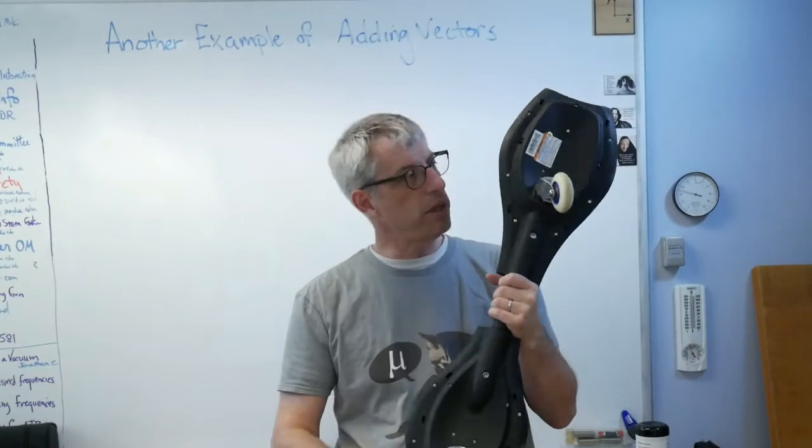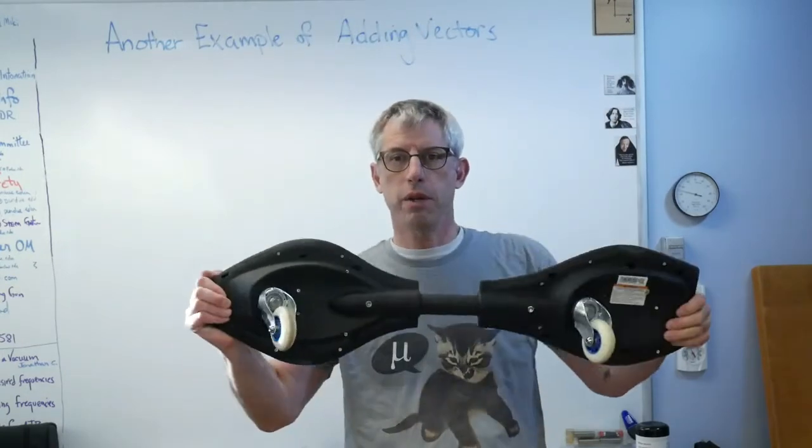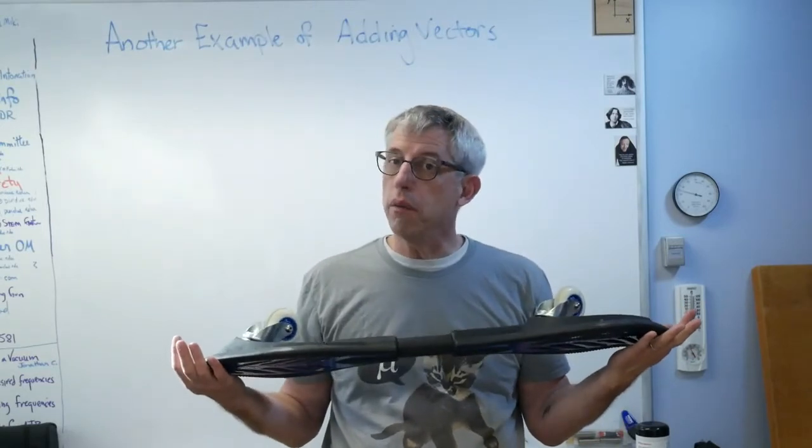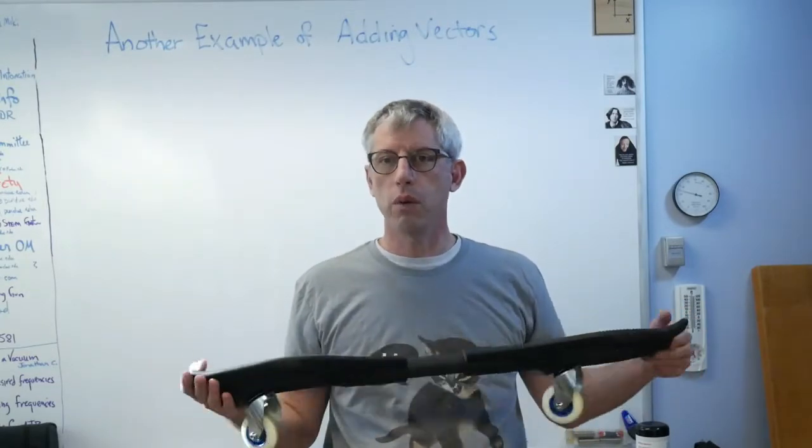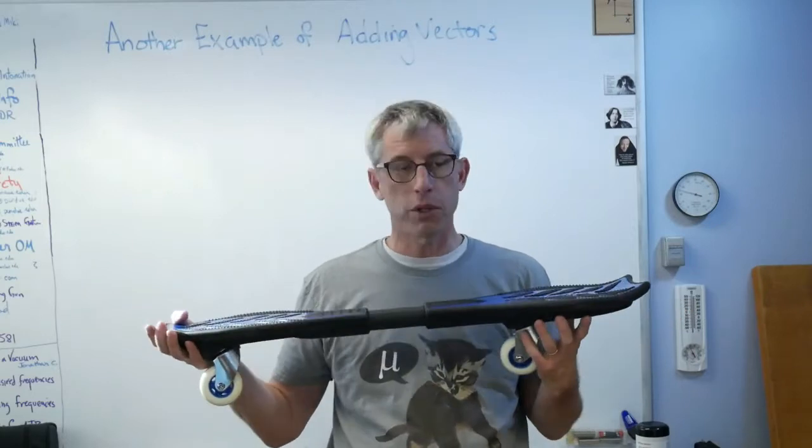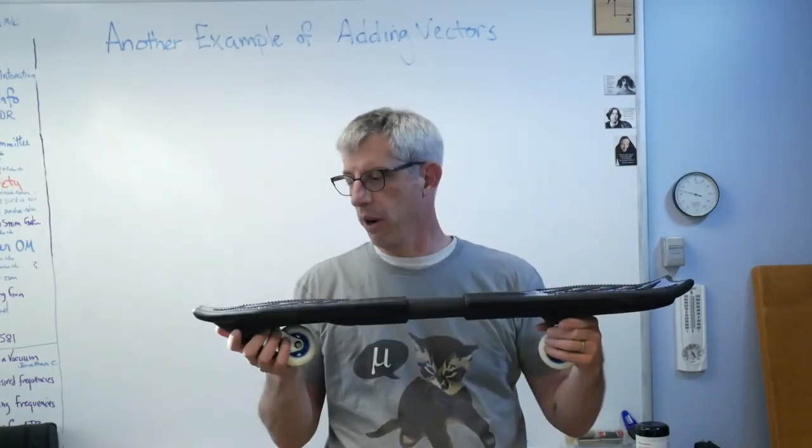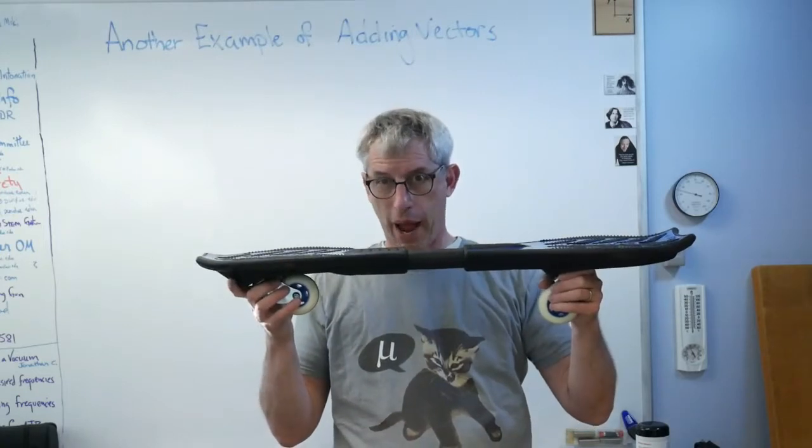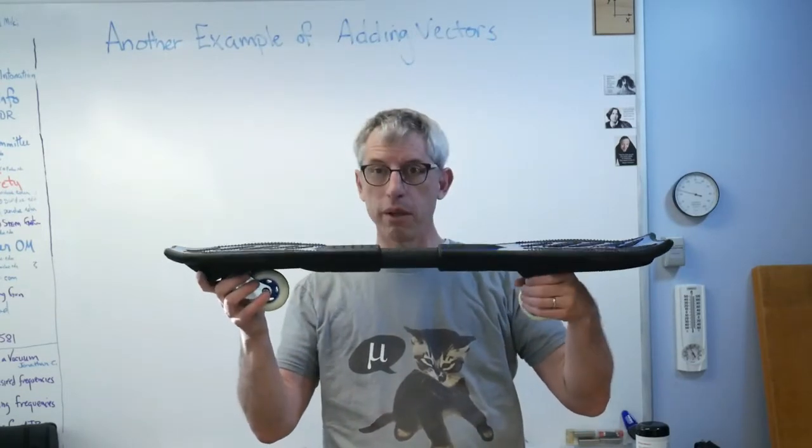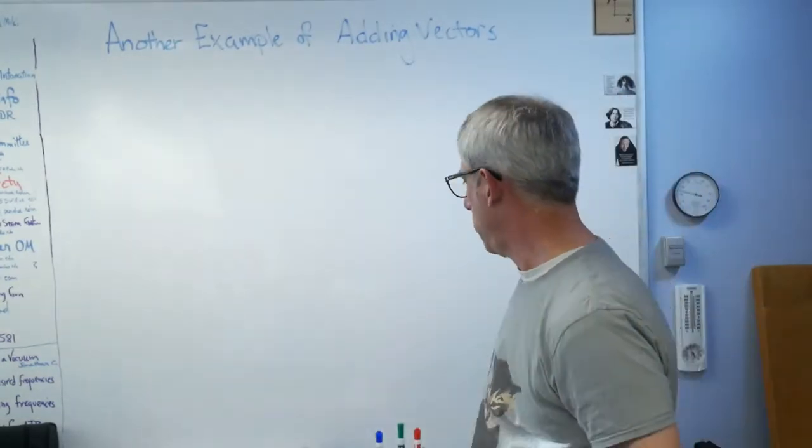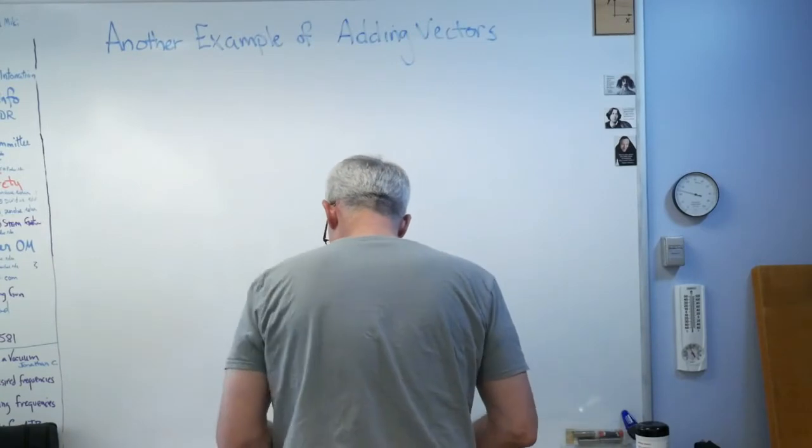This thing has this crazy drive system with wheels that spin about different axes and this thing in the middle that turns. When you add up all the forces acting on these things in vector form, what you get is a force forward. So when I ride this thing down the hallway in my building—it's good to have tenure—I get to go forward because of summing vectors.